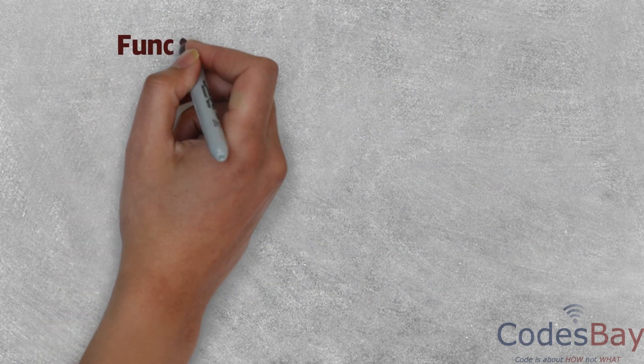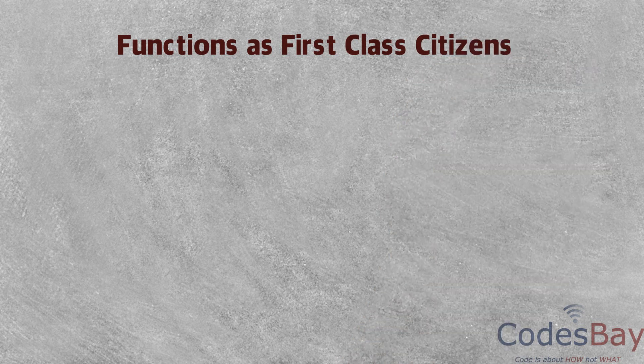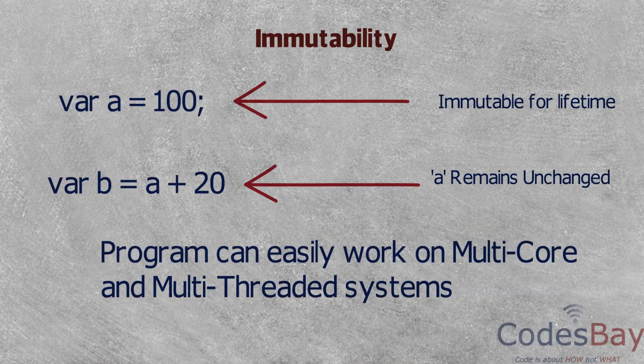In functional programming, functions are considered as first class citizen, which means that a function can be passed on to and returned from a function just like variables.